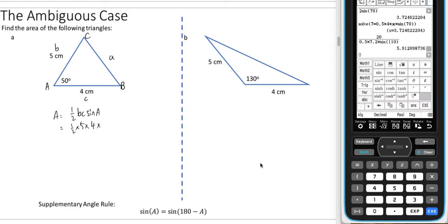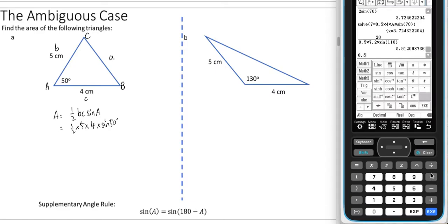Okay, and if we chuck that all together we can see that 0.5 times by 5 times 4 times shift 1 sine 50, and let's see what that makes, 7.66. So the area is 7.66 centimeters squared.